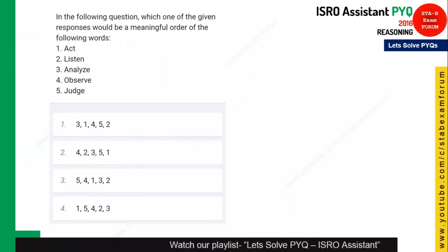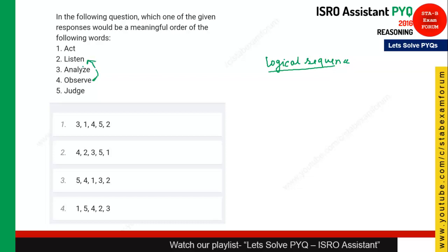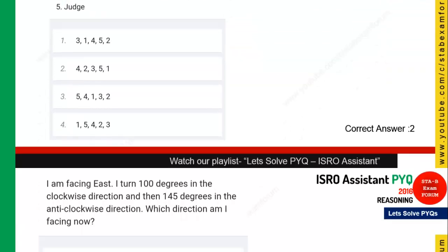The next question is from logical sequence — you need to arrange words in a meaningful order. Analyzing all the words: first a person observes (option 4), then listens, then analyzes, then judges, and finally acts. So the correct sequence is 4-2-3-5-1, which is option 2, and that is the right answer.